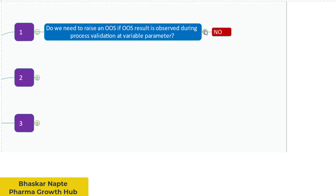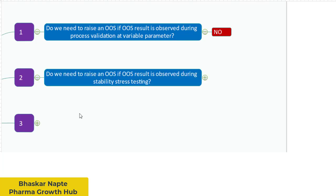You can certainly investigate the lab error through a lab incident, but raising an OAS is certainly not a necessity. The second question: do we need to raise an OAS if an OAS result is observed during stability stress testing?